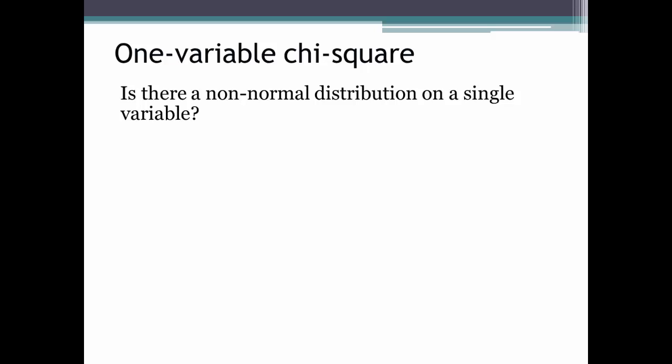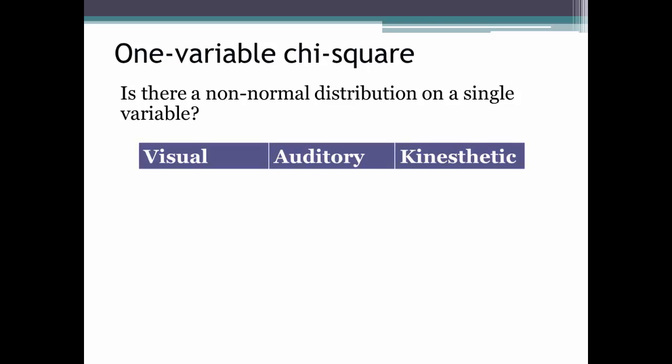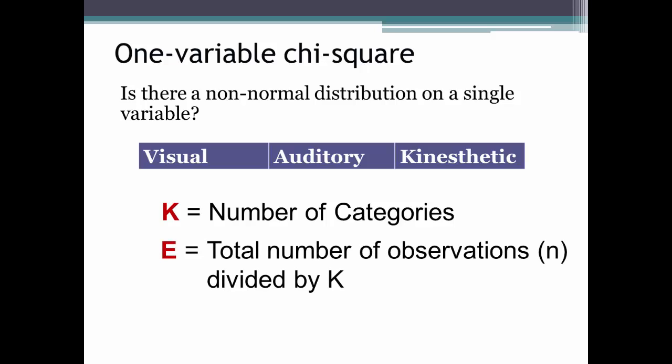Now let's focus on how to calculate a one-variable chi-square, where you are asking if there is a non-normal distribution on a single variable — in this case, what type of learning style. Remember that in our example there were three possible answers, meaning three categories. The number of categories is designated as K, and that helps you determine your expected data: total observations divided by K. One other calculation you will need is degrees of freedom, designated as DF, which is the number of categories K minus 1. In our case, that would be 2 degrees of freedom.